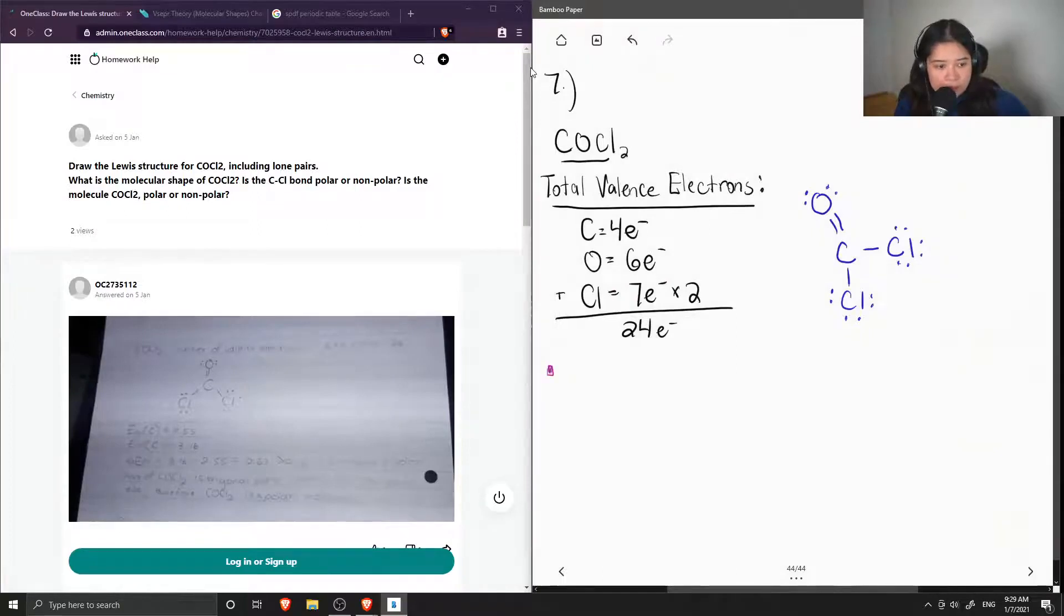So the next part of the question asks, what is the molecular shape of this molecule? So to answer this question, we are going to use the VSEPR theory, and we look at our central atom, which is the carbon, and count out how many lone pairs carbon has. So carbon has zero lone pairs.